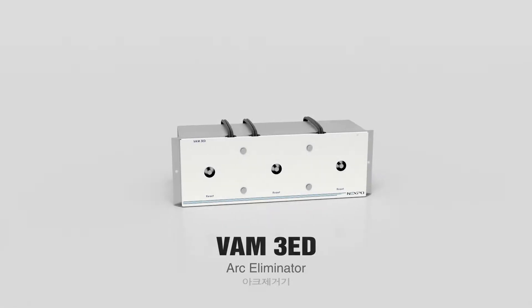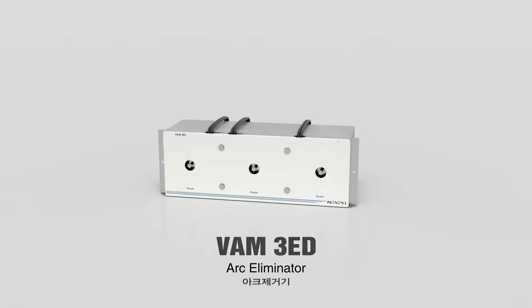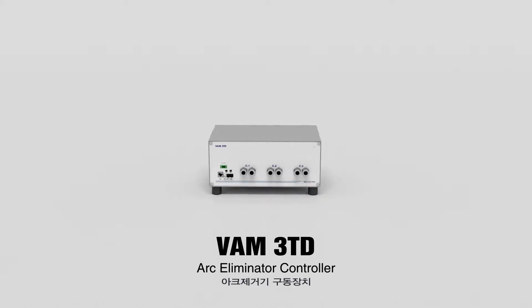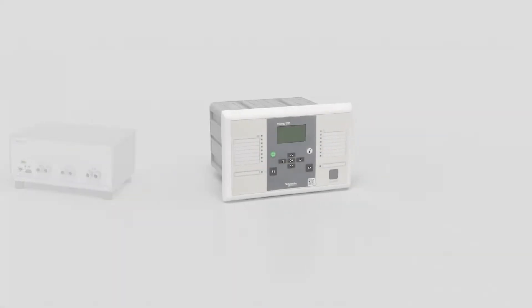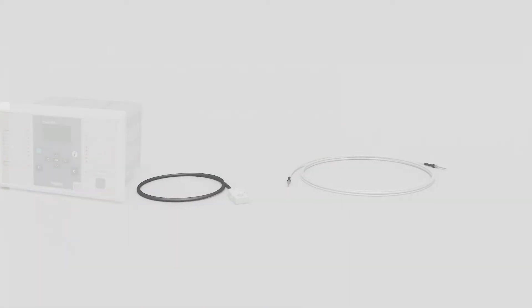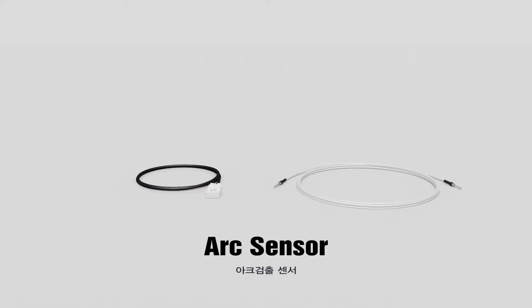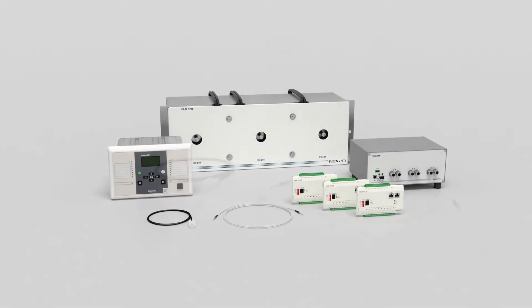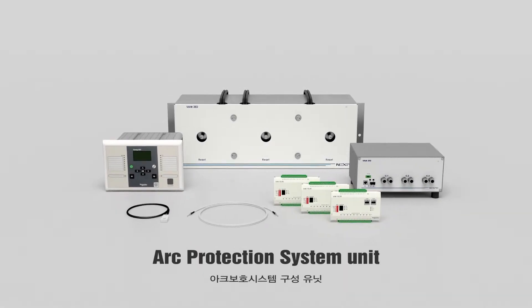The arc protection system consists of arc eliminator, arc eliminator controller that drives arc eliminator, arc protection relay that detects and judges arc, ground fault, and short circuit currents, and an arc sensor that detects arc flashes.